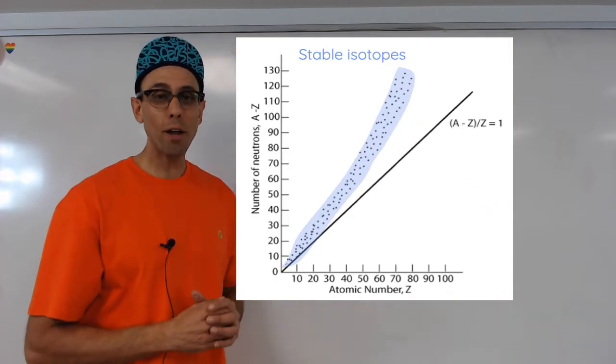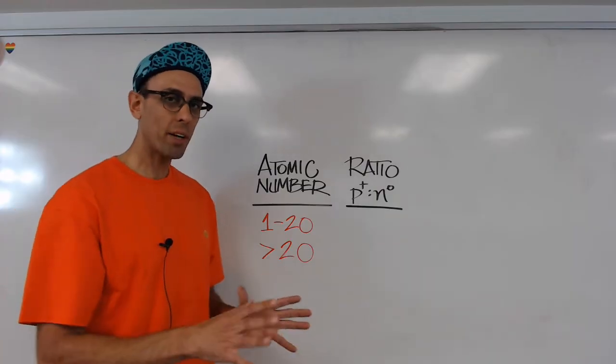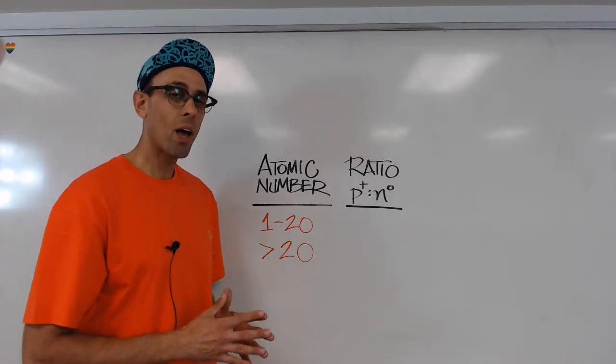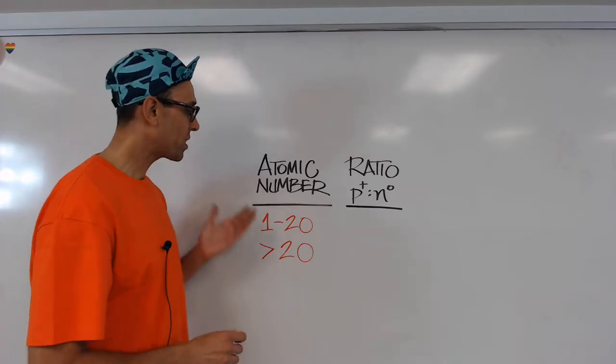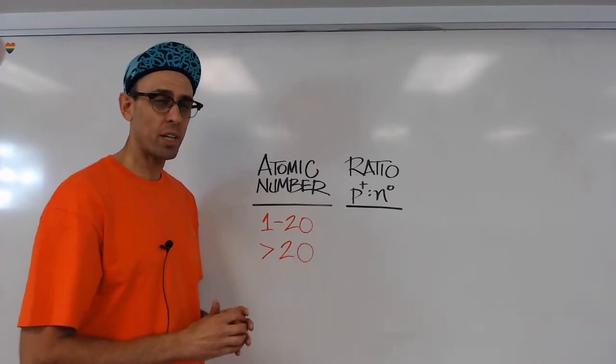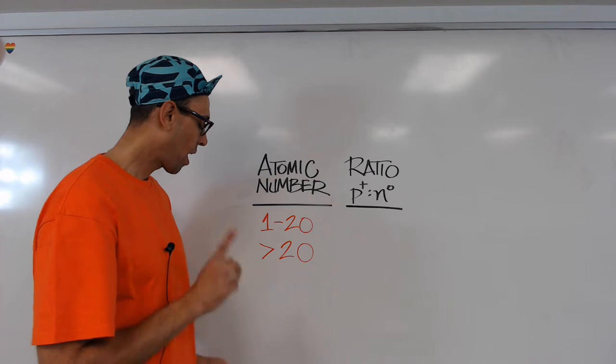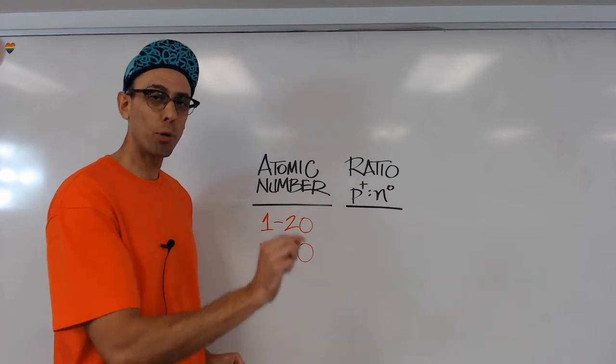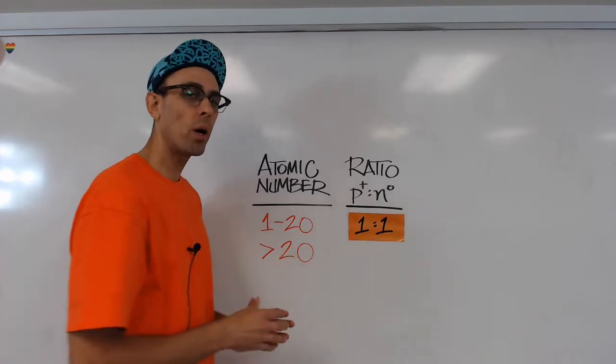So what can we take away from this graph? It turns out in order to judge whether a nucleus is going to be stable or not, we need to consider two factors. The first thing we should do is take a look at the atomic number. It turns out that if the atom in question has an atomic number between 1 and about 20, the ideal ratio of protons to neutrons for stability is about 1 to 1.